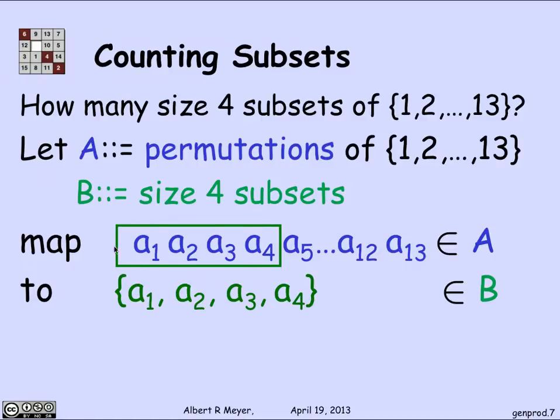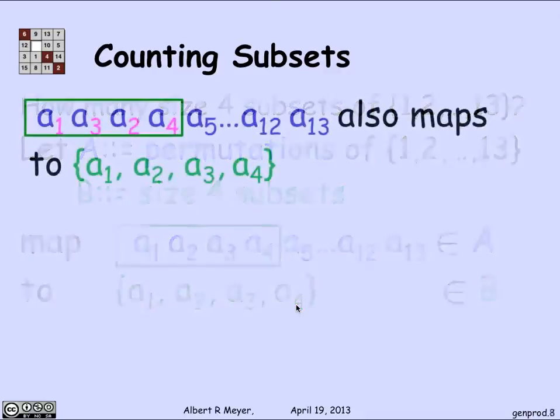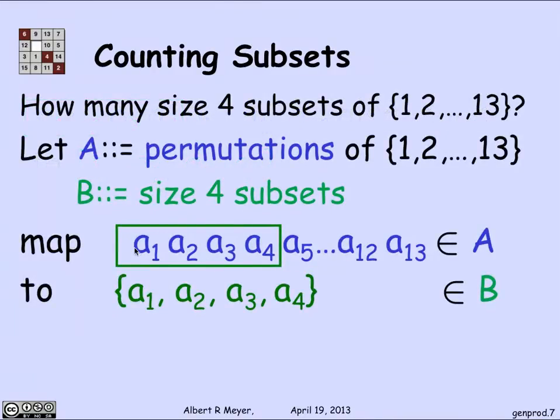Just take the first 4 elements of the permutation and map them to the set consisting of those 4 elements. Now since this is a permutation, these elements are all different. So I really do get a set of 4 different things here. A1, A2, and A3, and A4 are supposed to be different. This gives me a very well defined total function from a permutation of 13 numbers to a set of its first 4 elements. And now what we want to know is what kind of a mapping is this? And I'm going to argue that it's K to 1 for a K that's not very hard to count. So when I look at what other things map to the set A1, A2, A3, A4, we mapped a permutation to its first 4 elements.